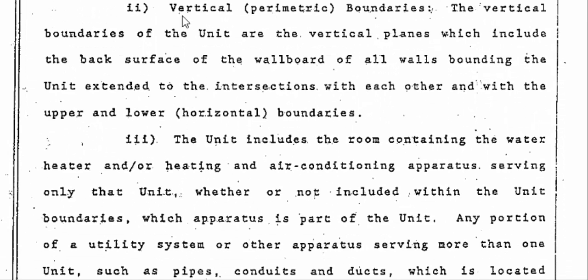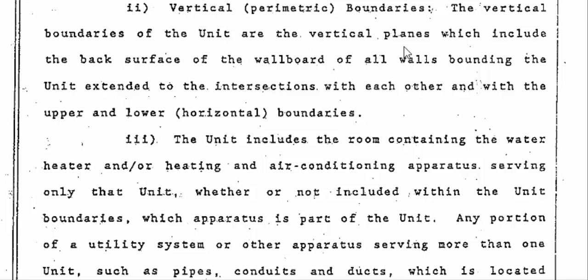Now let's look at the vertical boundaries. The vertical boundaries of the unit are the vertical planes which include the back surface of the wall board of all walls bounding the unit, extended to the intersections with each other and with the upper and lower horizontal boundaries. Sounds complicated — it's not. It's what we're going to refer to as drywall.